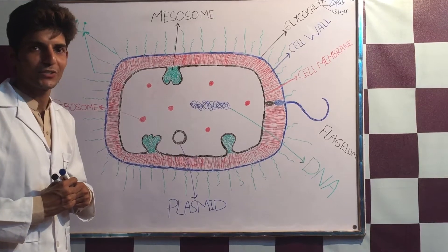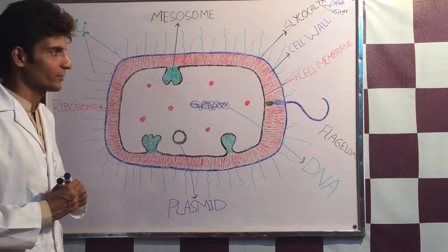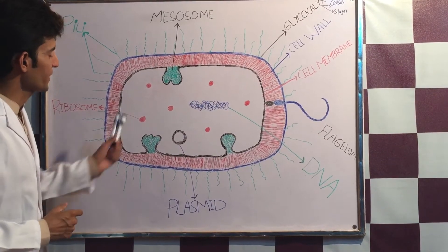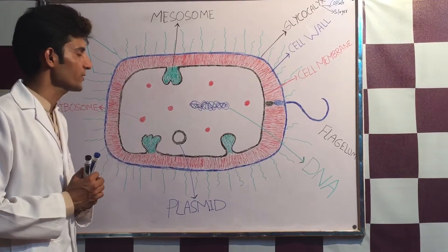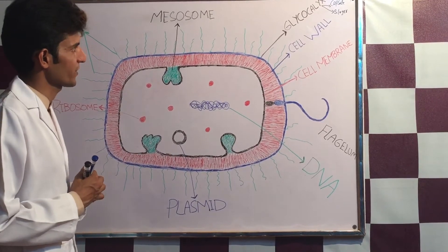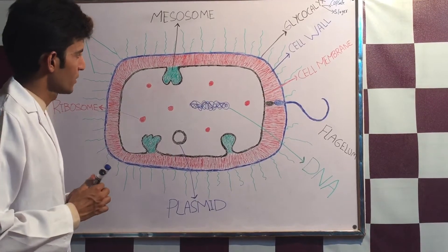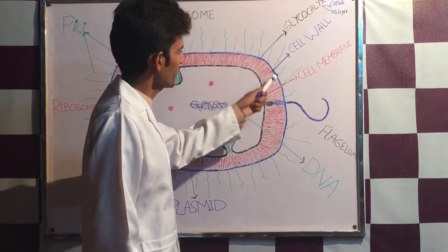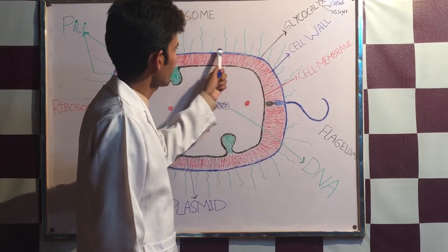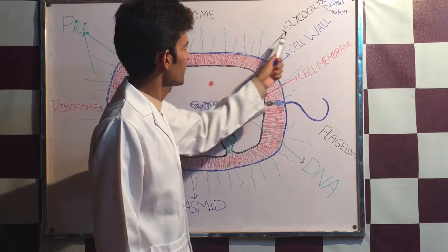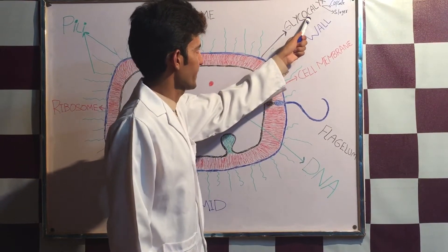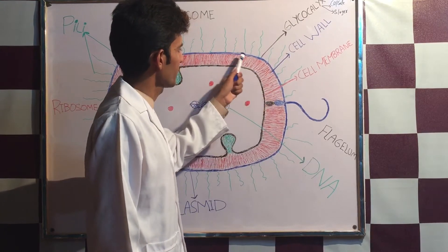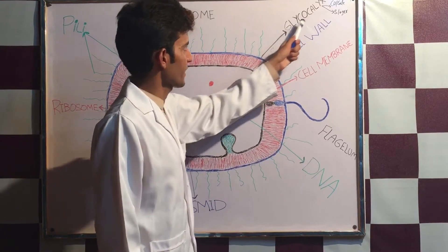Hello guys, welcome to Learning Medicine. Today I'm going to talk about bacterial structure, especially about new bacteria. The outermost layer — the blue one — is called the glycocalyx.